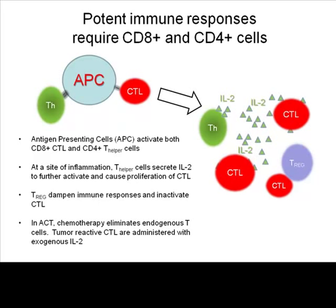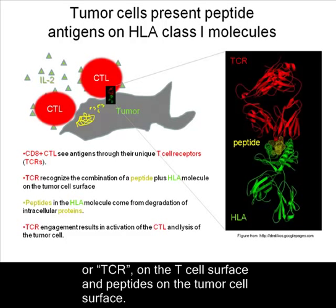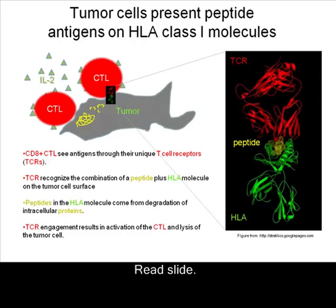The key players in the encounter between a T cell and a tumor cell are the T cell receptor, or TCR, on the T cell surface, and peptides on the tumor cell surface. CD8 positive CTL see antigens through their unique T cell receptors. TCR recognize the combination of a peptide plus HLA molecule on the tumor cell surface. Peptides in the HLA molecule come from degradation of intracellular proteins. TCR engagement results in activation of the CTL and lysis of the tumor cell.